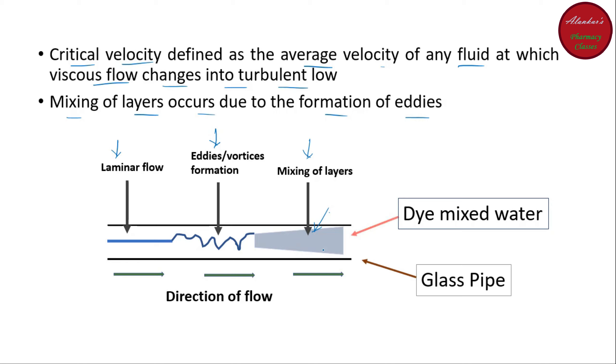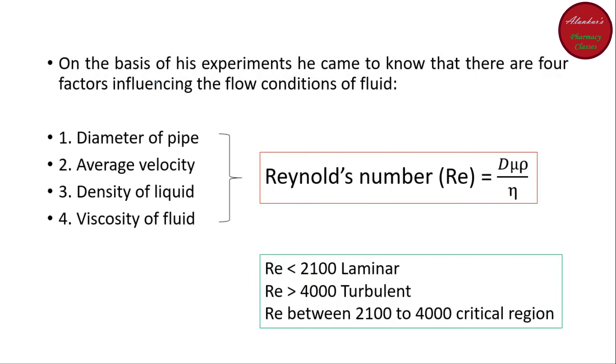And in this way, the whole water is now colored with the color of the dye. And that is why there should be certainly a transition phase between the flow of fluid changes from laminar to turbulent. And he named this velocity of water as the critical velocity. And after this experiment, he found that there are the four different factors which influence the flow conditions of fluid.